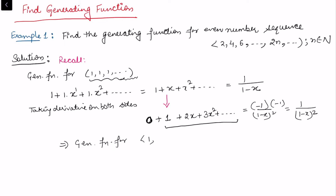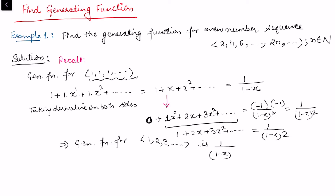Notice that 1 is multiplied by x to the power 0. So I can read the sequence as the set of natural numbers 1, 2, 3, and so on, and the generating function for this is 1/(1 - x)².